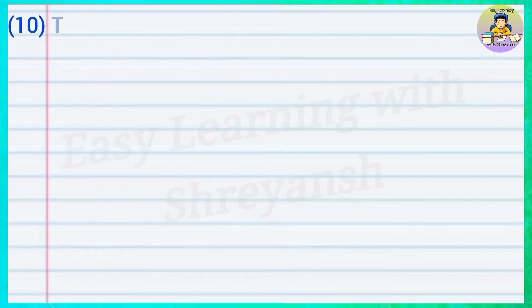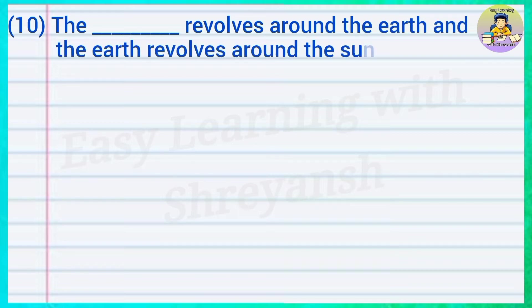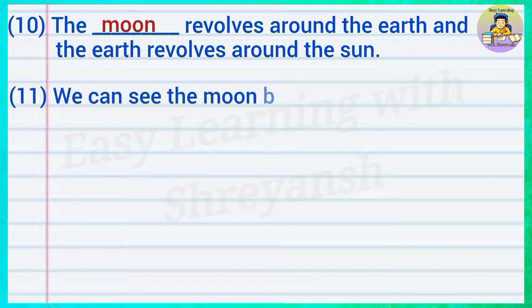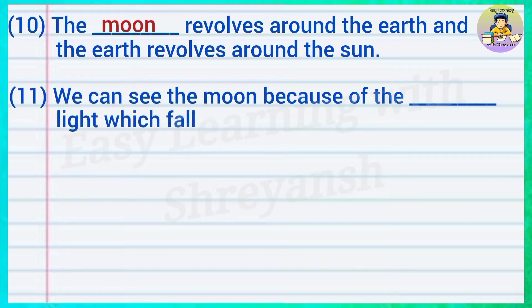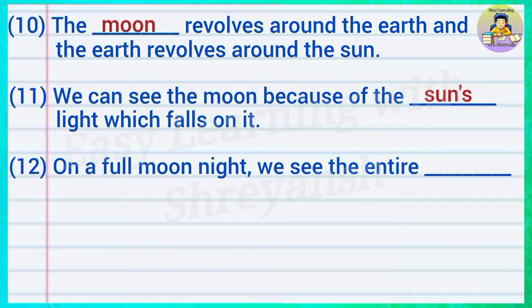Ten — the — revolves around the earth and the earth revolves around the sun — answer: moon. Eleven — we can see the moon because of the — light which falls on it — answer: sun's.